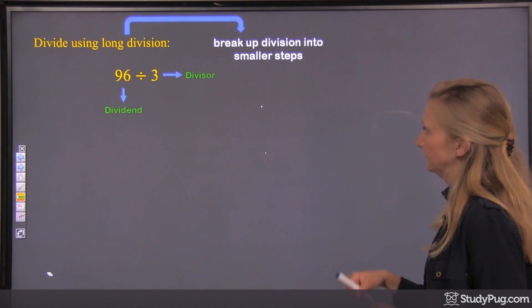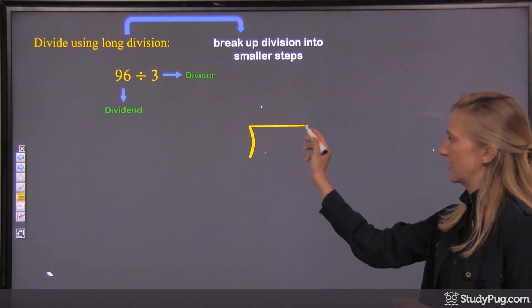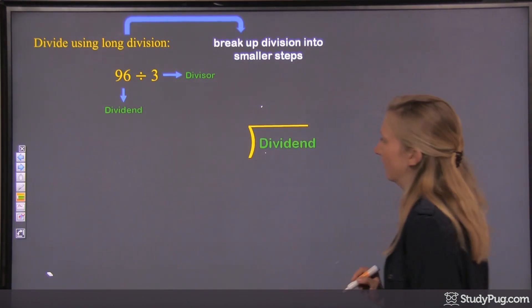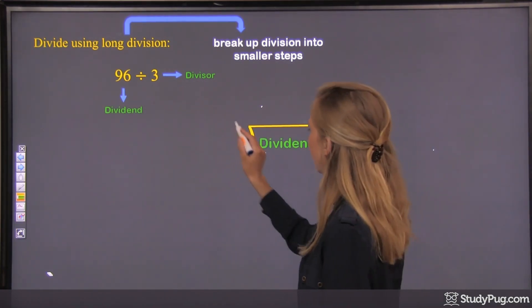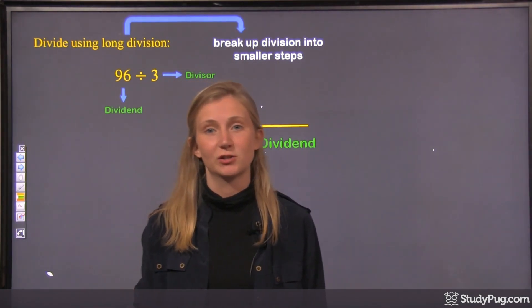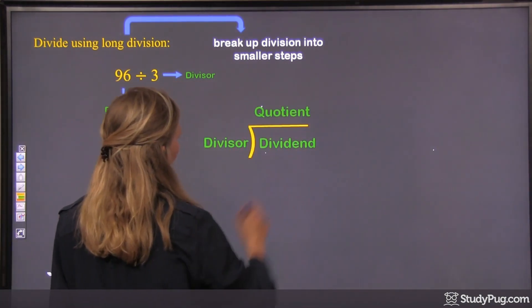So when we set up a long division, we use this box. Okay, a box that looks like this. And we put our dividend right there, and we put our divisor right there. And then the quotient, which is the answer to the division question, once we find it, it's going to go up top here.